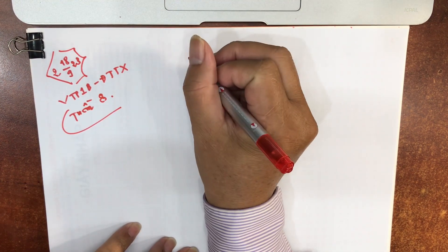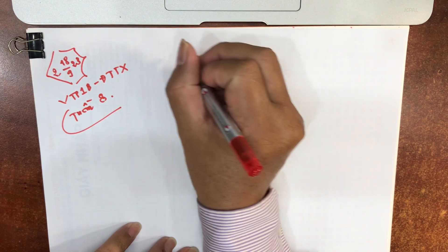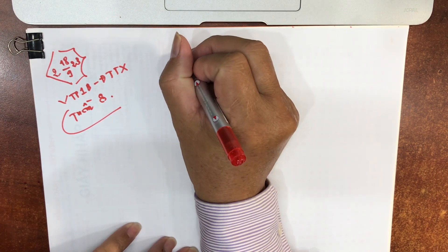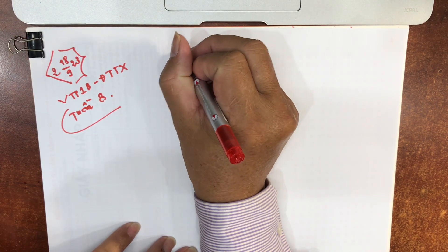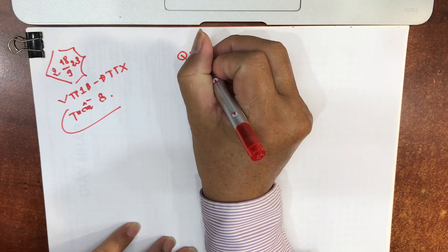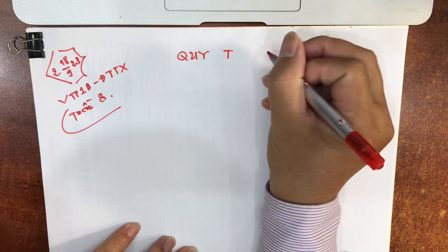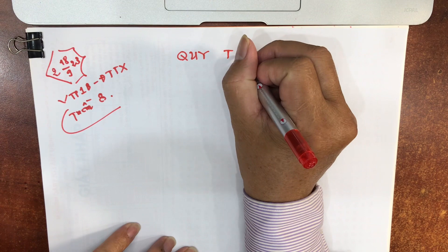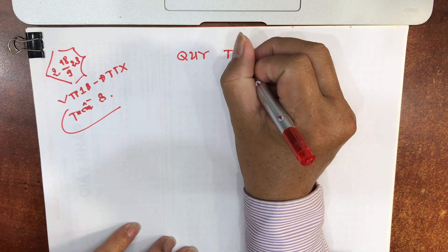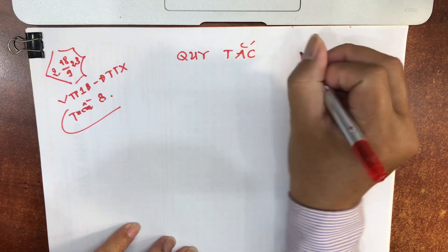Hôm nay công việc là chúng ta tìm hiểu cái nội dung cuối cùng của chương đạo hàm. Đó là một cái ứng dụng của đạo hàm vào việc tính giới hạn hàm số, có tên gọi là quy tắc L'Hôpital.